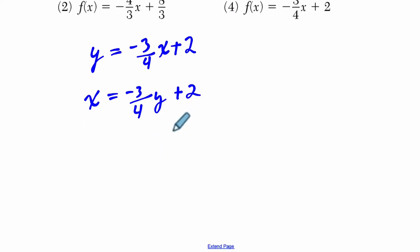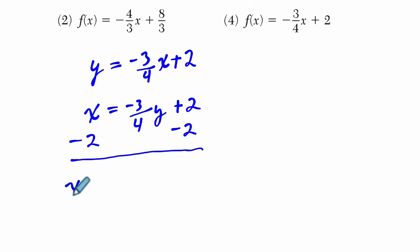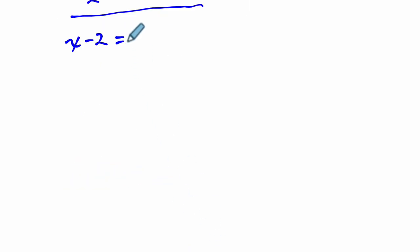Now I want to solve for y. How do I do that? Well, first thing I'm going to do is subtract 2 from both sides. Okay, it's working out. We get x minus 2, and that's going to equal negative 3 fourths y.